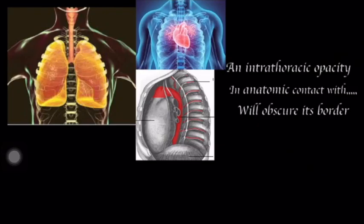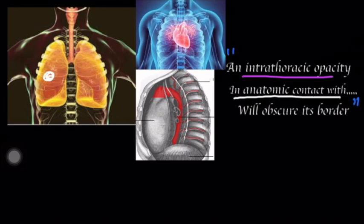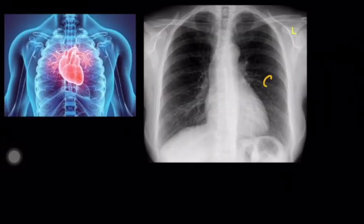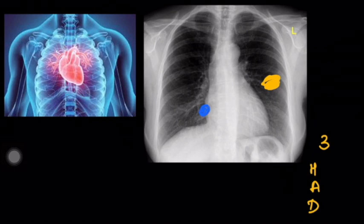The Silhouette sign is based on this definition: an intrathoracic opacity, if in anatomic contact with the heart, aorta, or diaphragm, will obscure its border. So by definition, you should have an intrathoracic opacity, and if this opacity is in anatomic contact with these three structures — the heart, aorta, or diaphragm — then it must obscure its border.